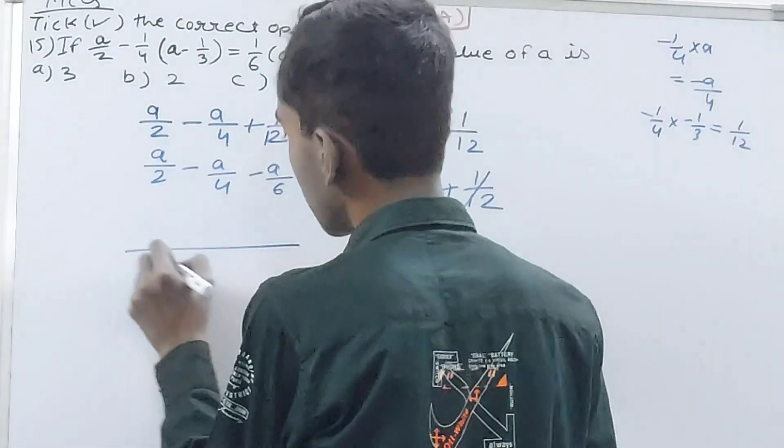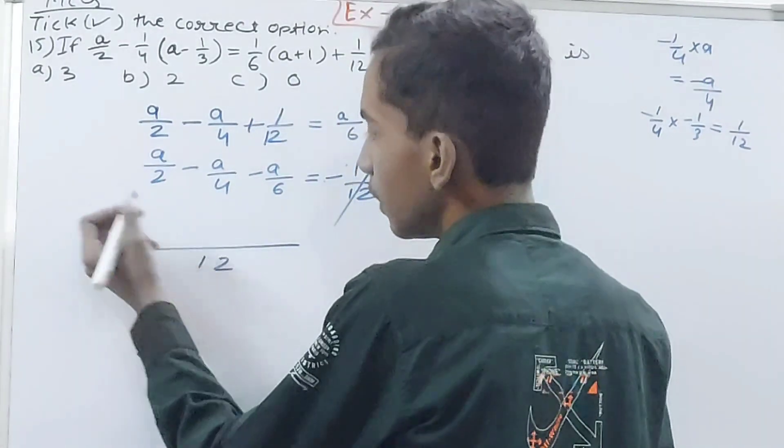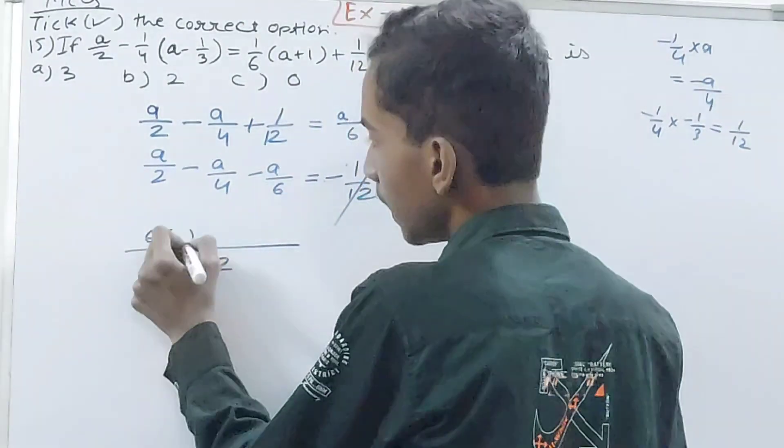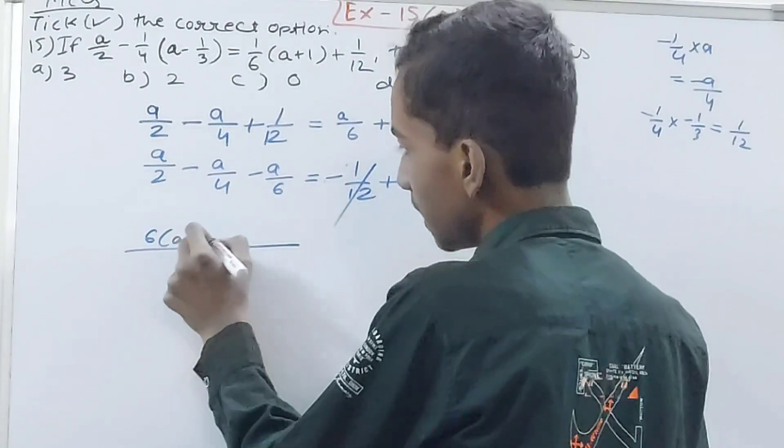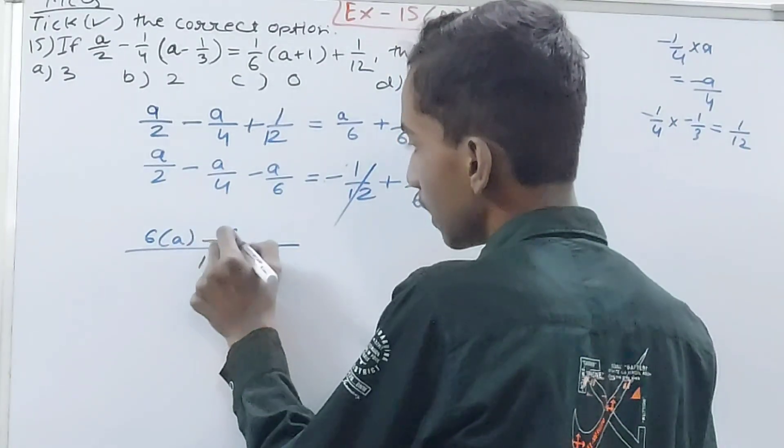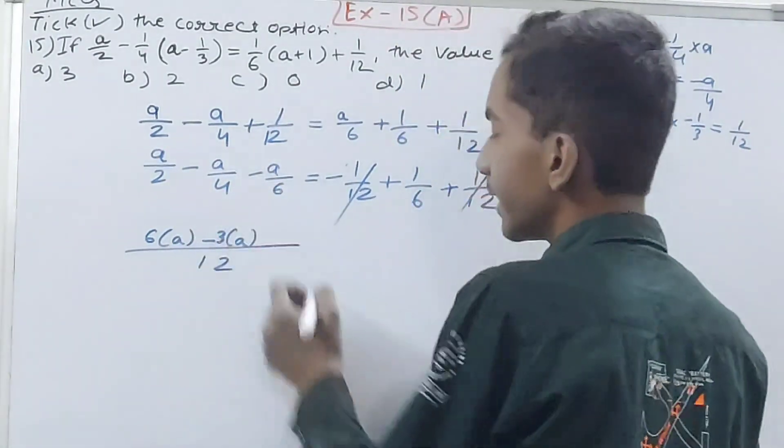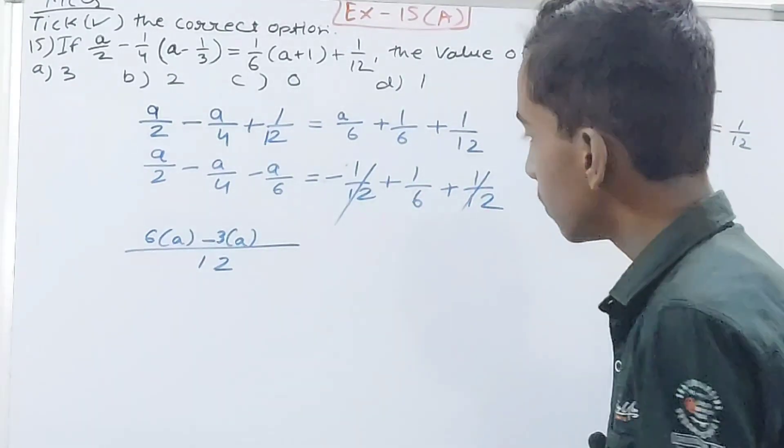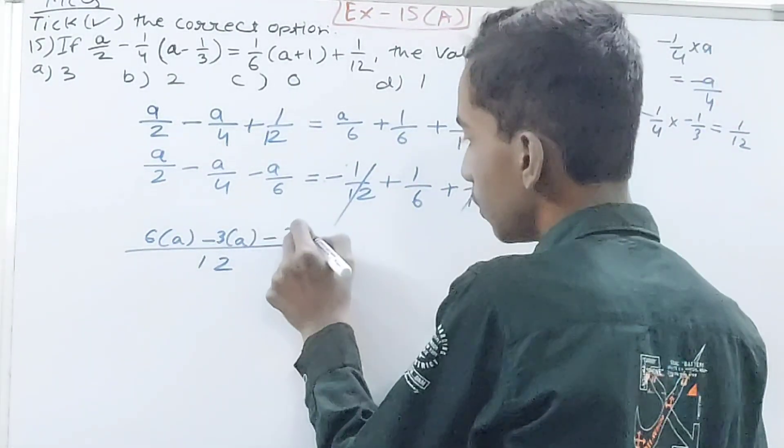a/2 minus a/4 minus a/6, their LCM will become 12. 2 into 6 is 12, so 6 into a. 4 into 3 is 12, so minus 3 into a. And 6 into 2 is 12, so minus 2 into a.